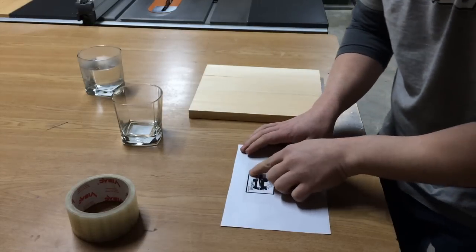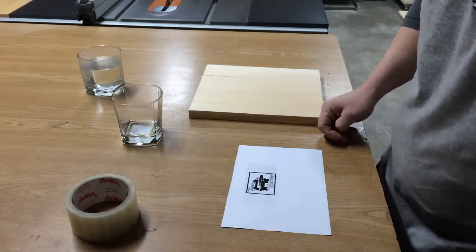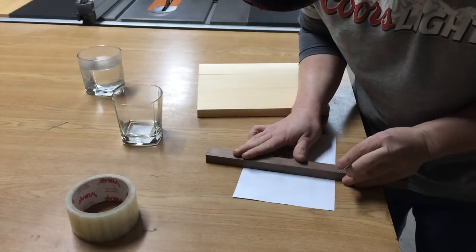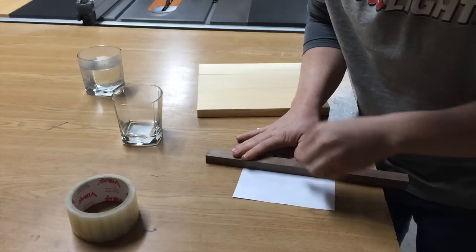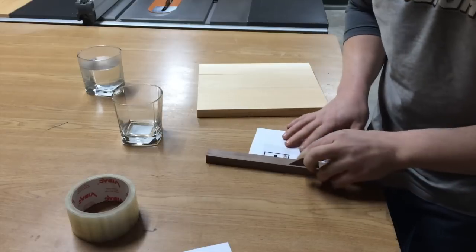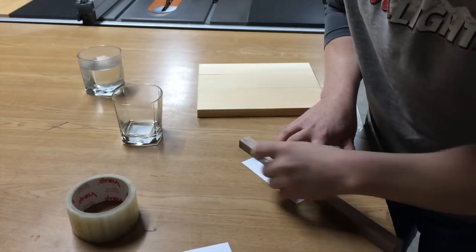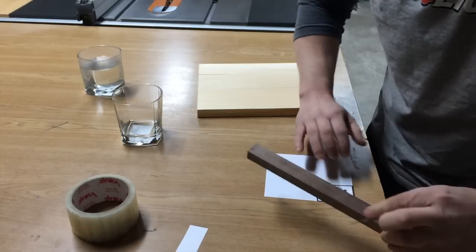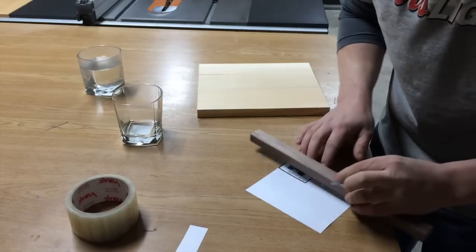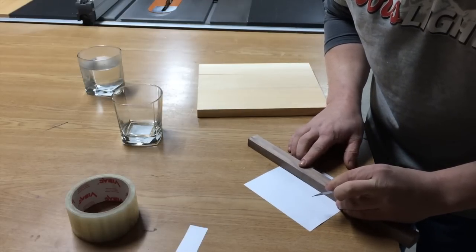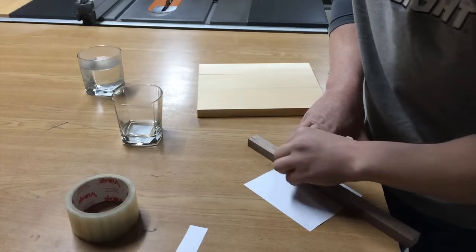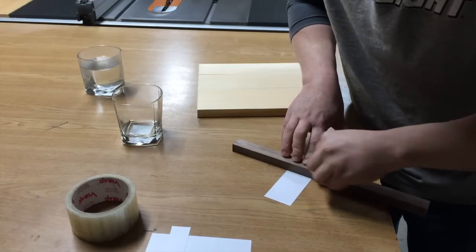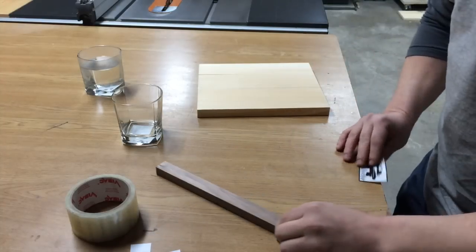Next I'm just going to cut it out with my exacto knife, and I'm using a little piece of walnut here as a straight edge just to make sure I get the corners nice and square. Sometimes I do things a little bit different because I'm left-handed.